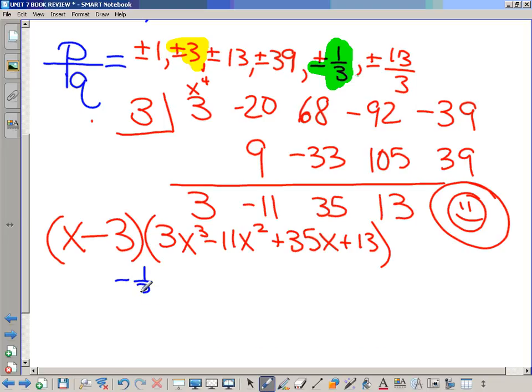Take negative one-third. Guess what? Now do synthetic division on the new factor. If negative one-third is a factor or is a root, it's going to be one of the zeros of this piece. So do negative one-third with 3, negative 11, 35, and 13. Not the original problem, but the new factored part. Alright? You're breaking that down further. Let's see if it works.